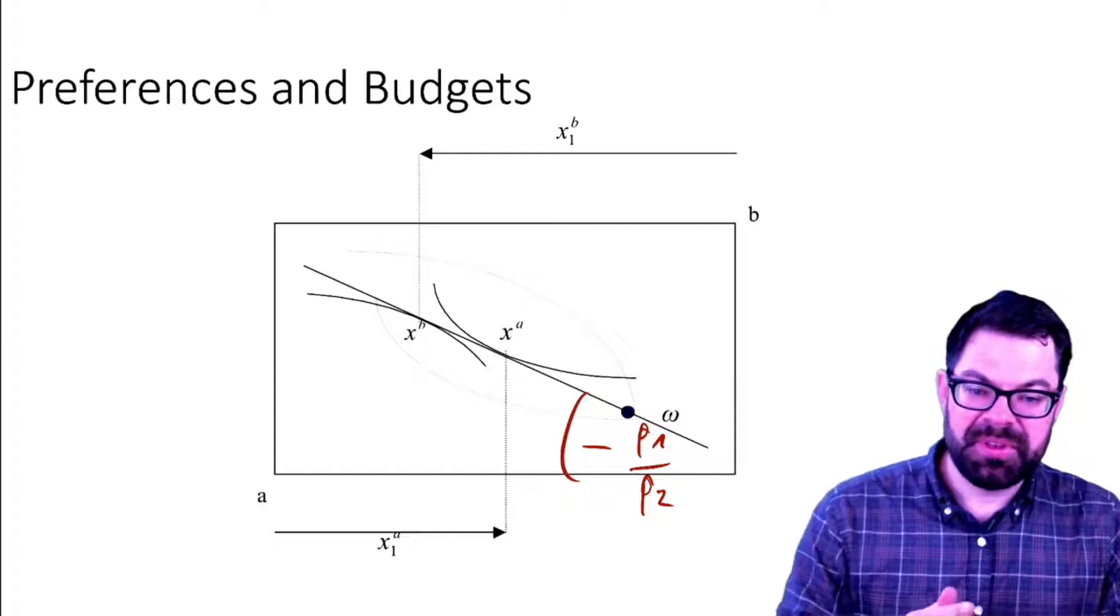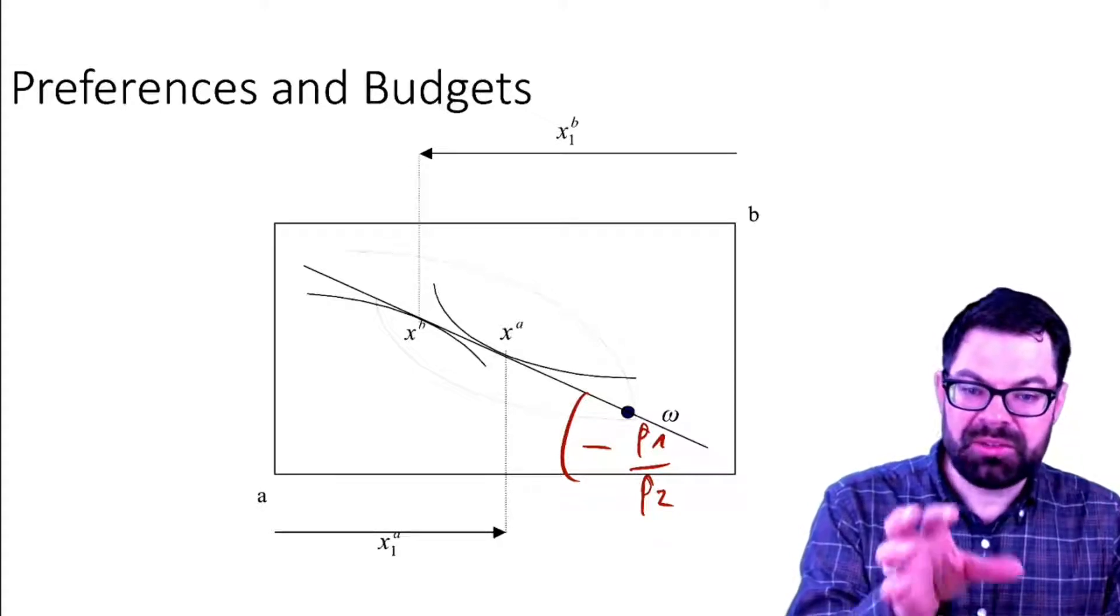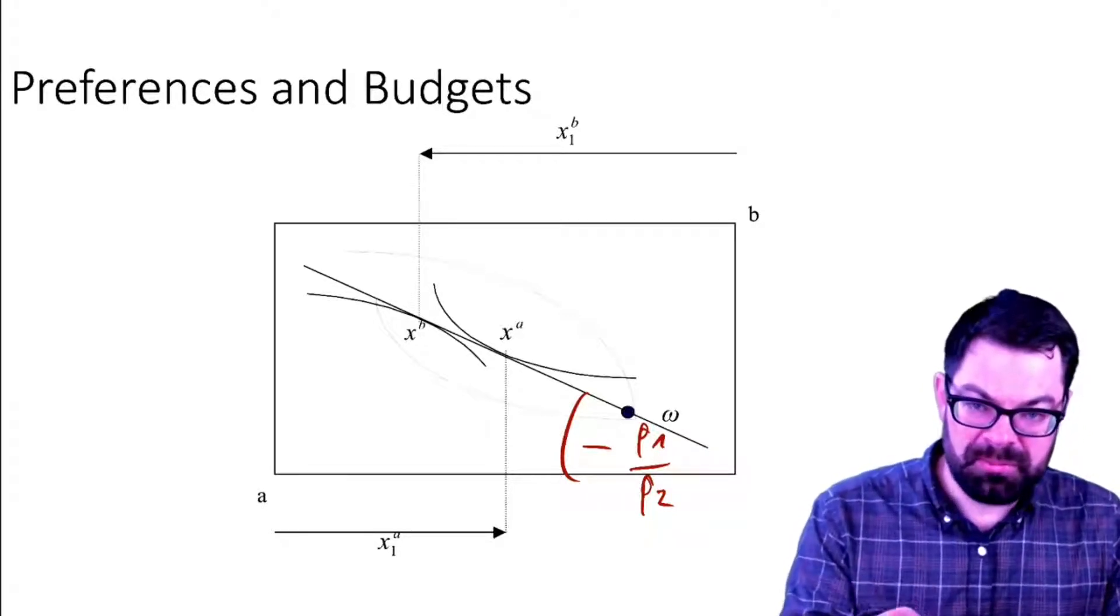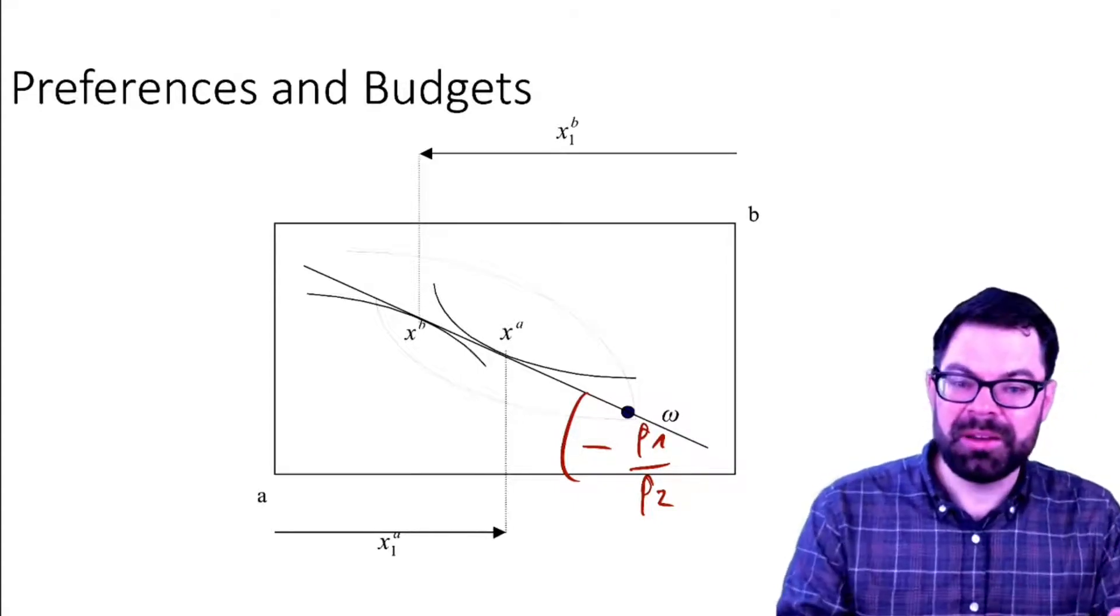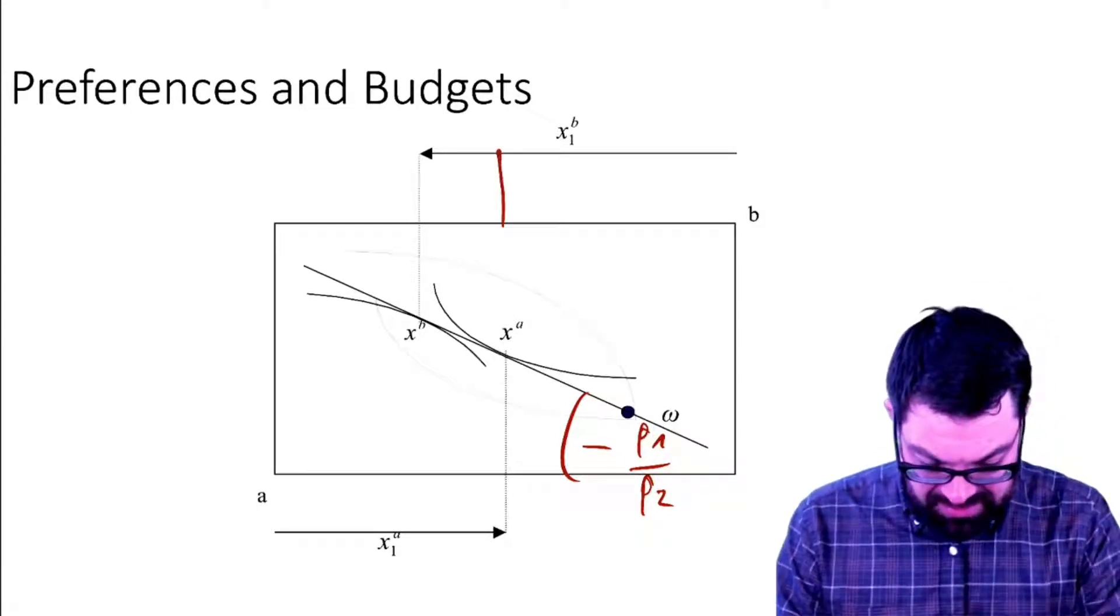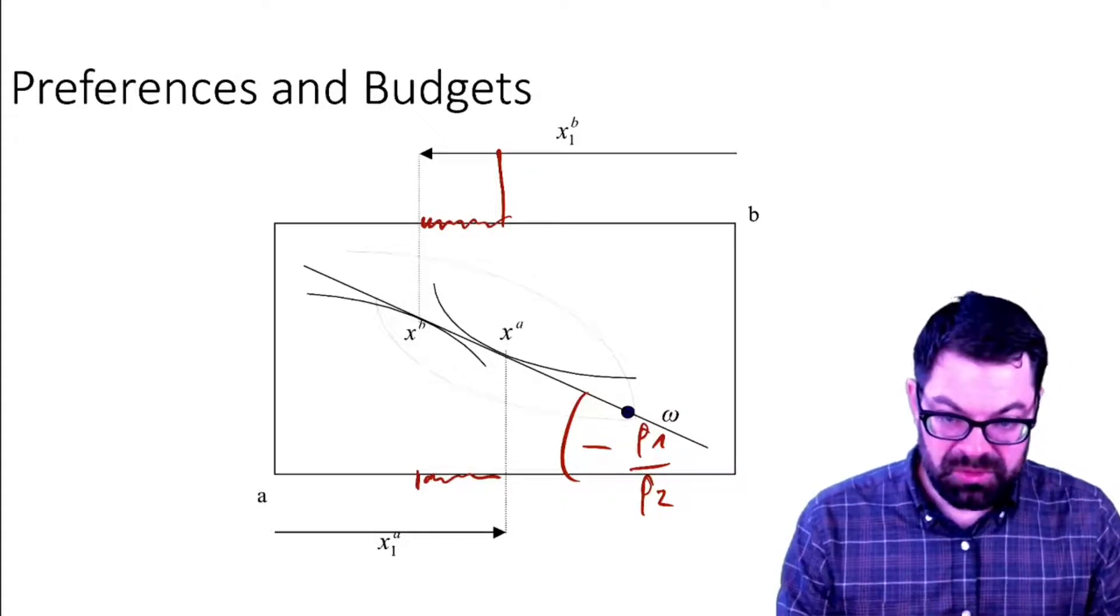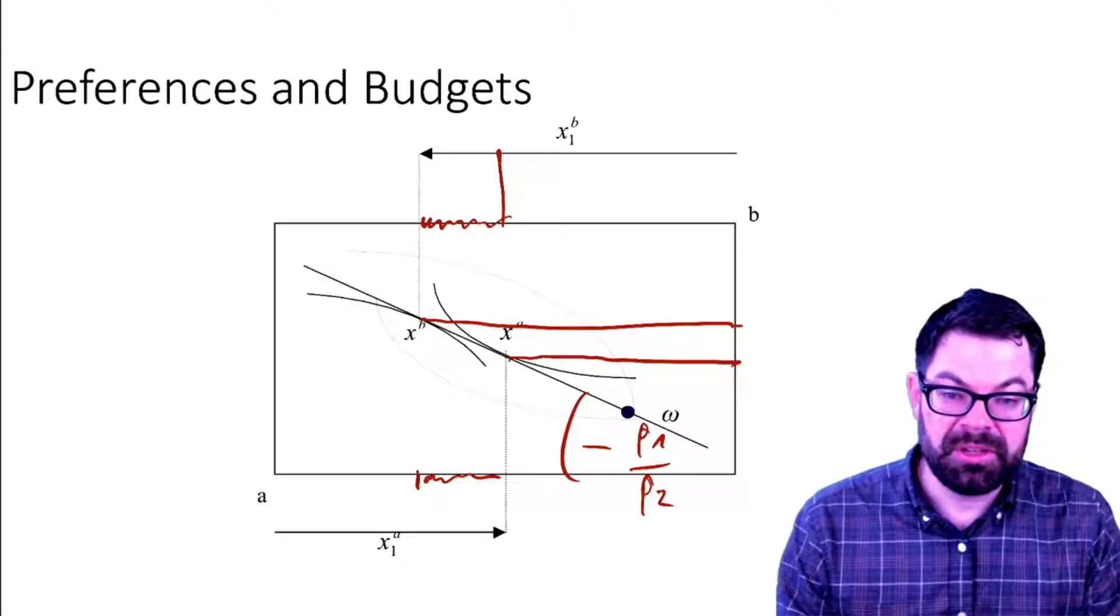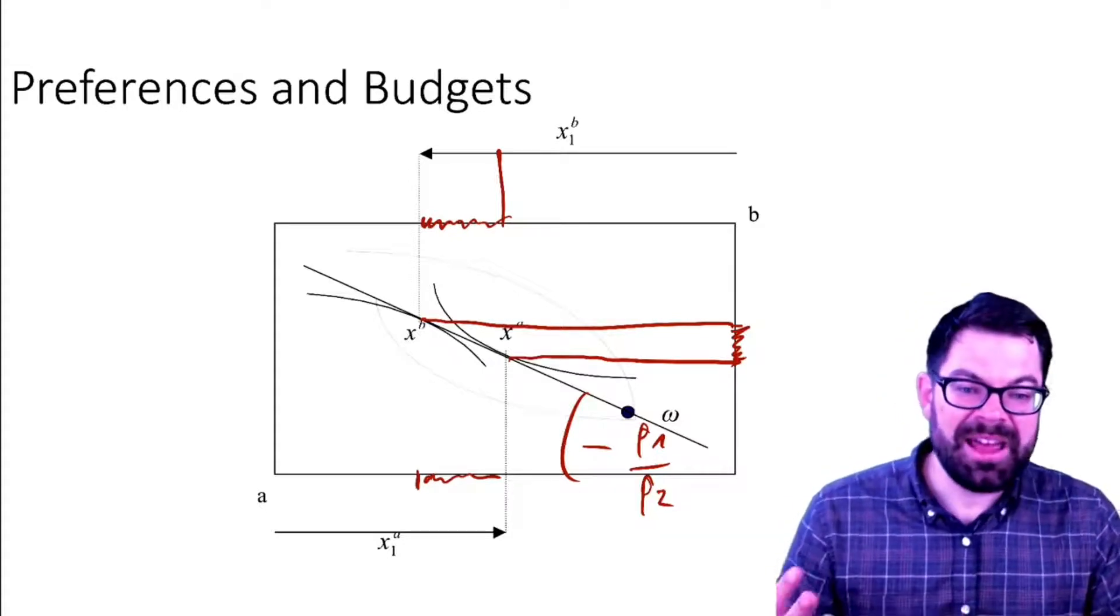Now we've also seen in this graph that at that price ratio where good one appears to be relatively cheap and good two appears to be relatively expensive, we have a situation where both market participants demand too much of good one. They demand in total more than what is actually available and they demand too little of good two. You can see the excess demand for good one here and here. You can also see a gap in the demand for good two. There is a shortfall of demand, or you can also say there is excess supply of good two.